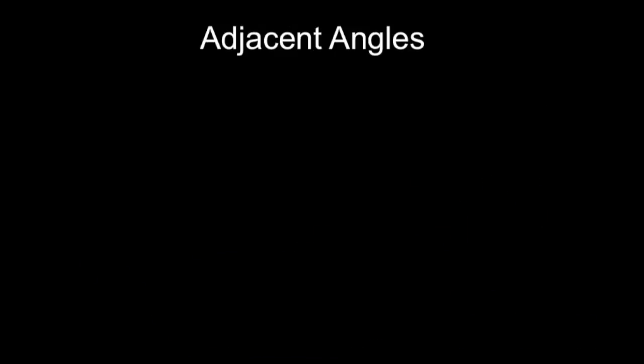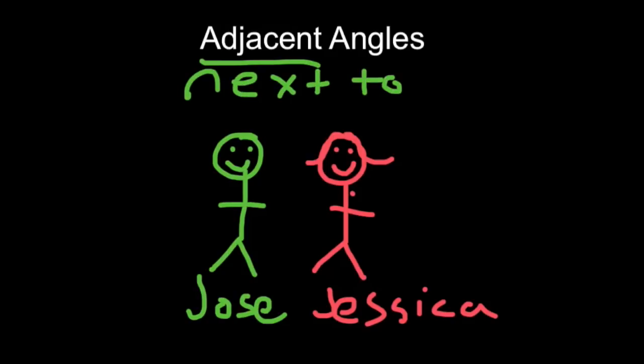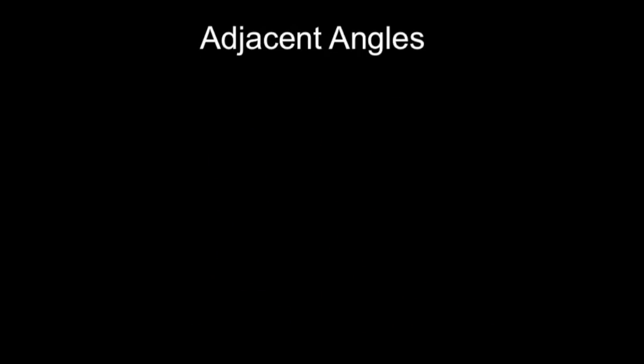Now, adjacent angles are angles that are going to be right next to each other, where they're sharing one side and a vertex. The word adjacent is a pretty useful word—you can use it all the time. It just means next to. So if Jose is standing next to Jessica, he could also say, 'I am adjacent to Jessica.' So adjacent angles are right next to each other.